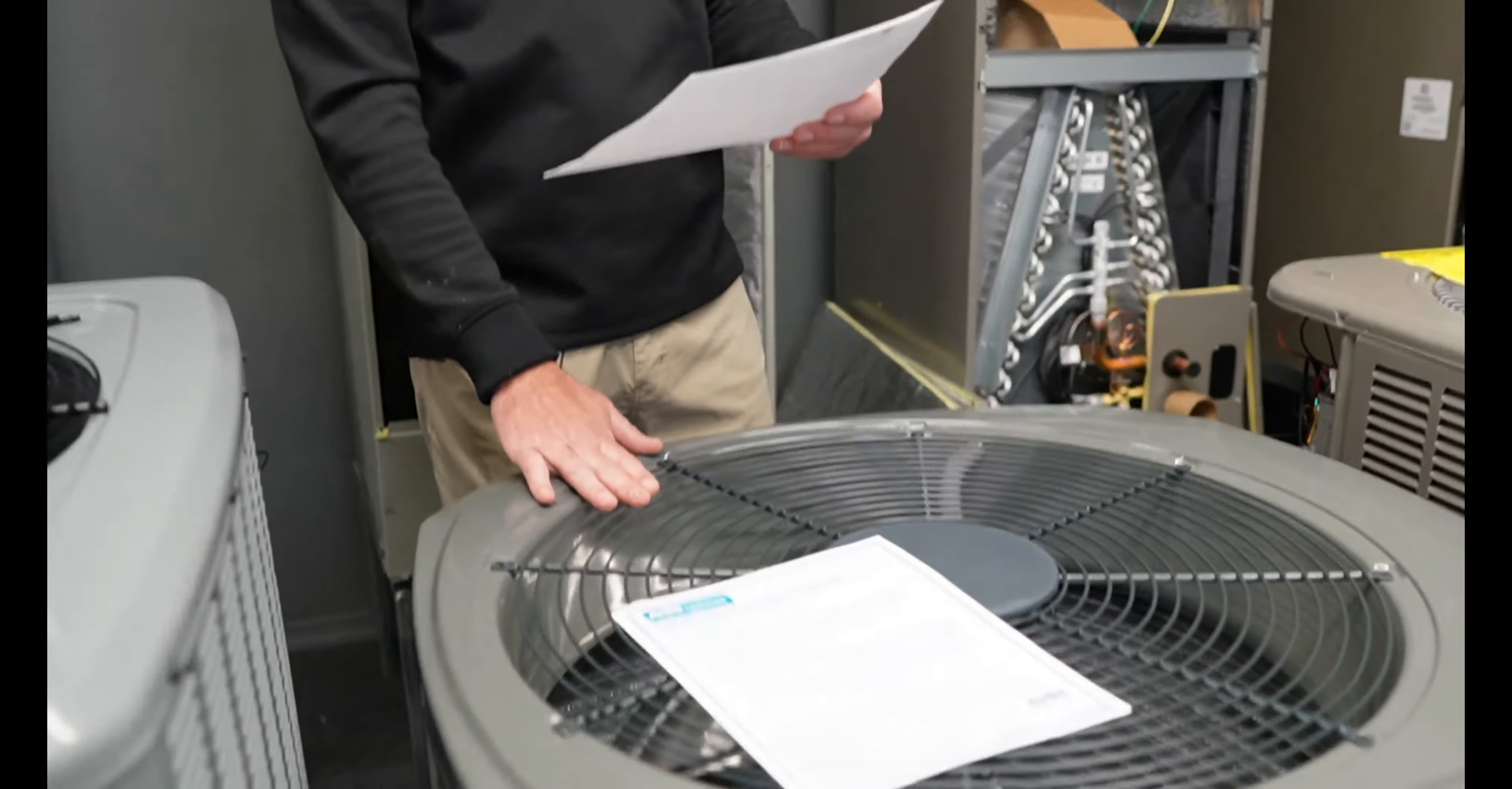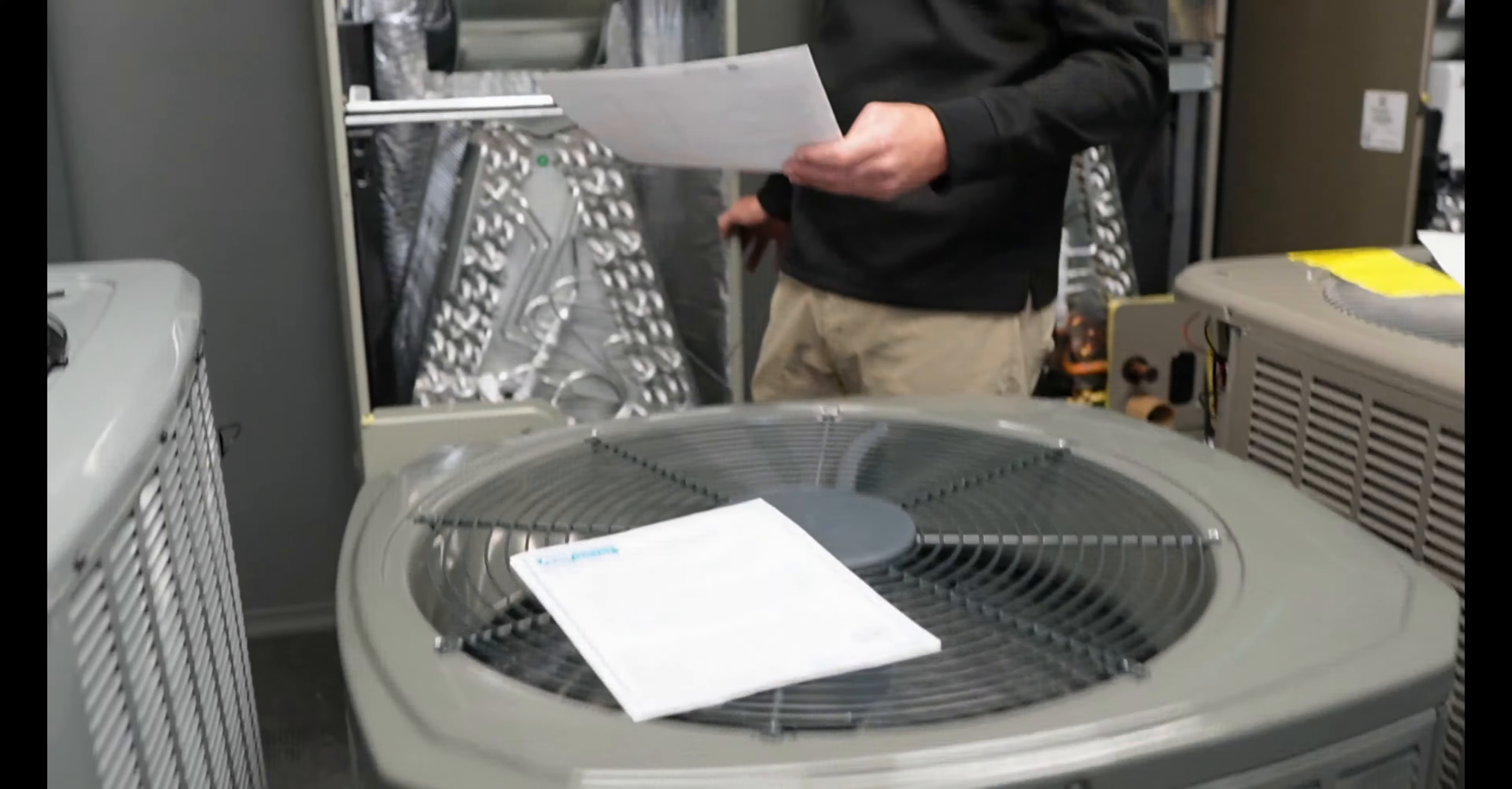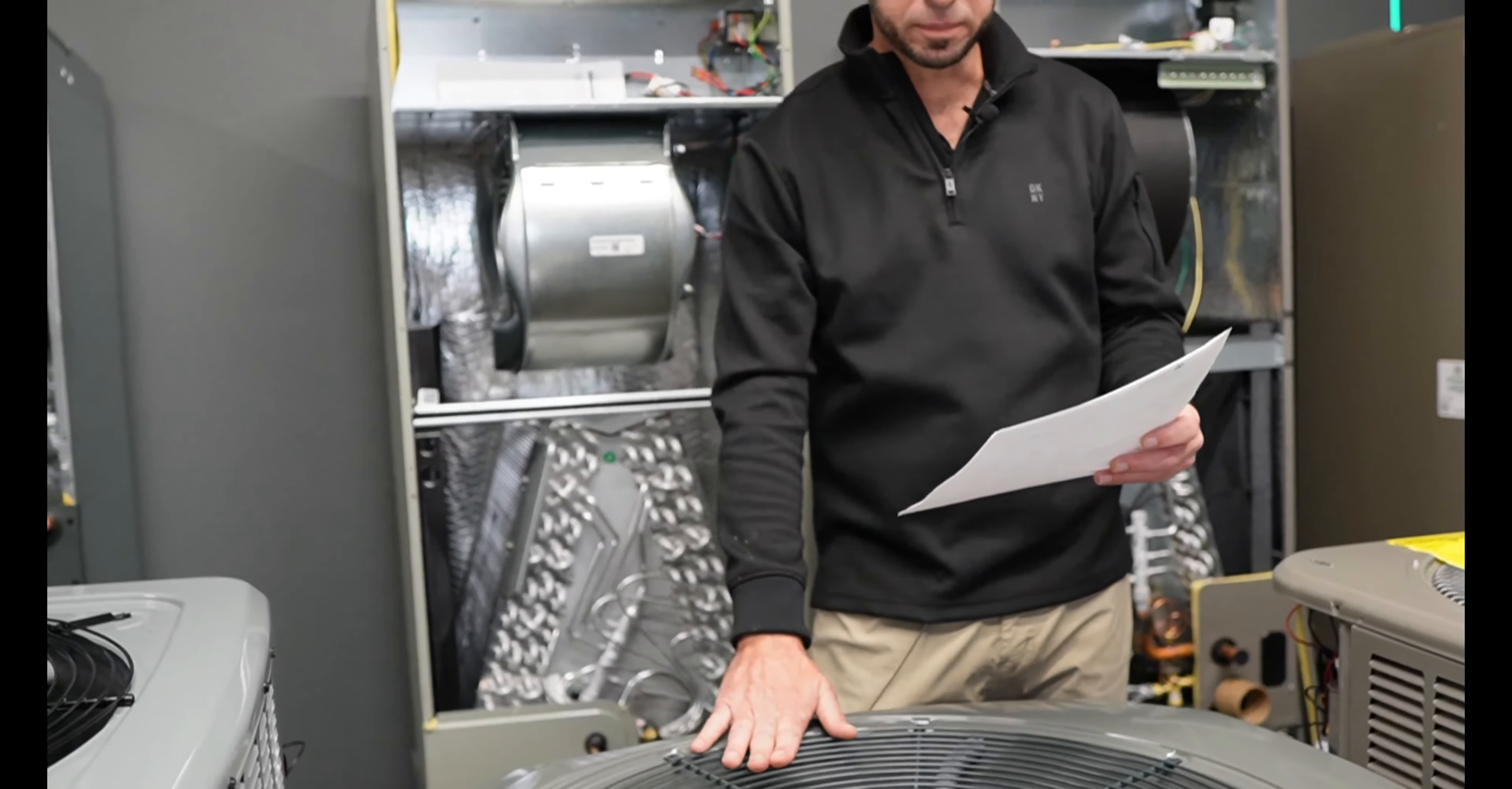This condenser is a 4TTR4036. Air handler is a TEM4B037. This is a SEER 2 rating of 14.3, and the BTUs on it is 34,200. So let's get started.